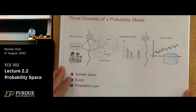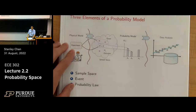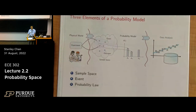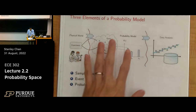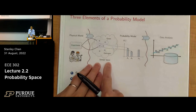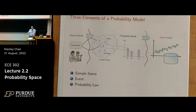Here is a pictorial illustration of everything we need for probabilistic analysis. You always start with an experiment — a chemistry experiment, physics experiment, or data science where you collect data, ask people for opinions, or build a recommendation system. This is how you collect your data.